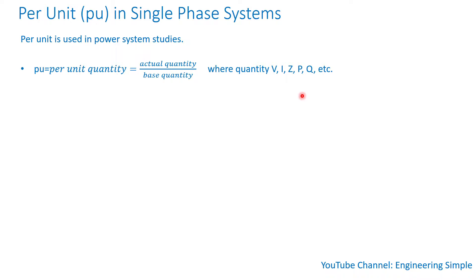It can also be reactive power in megavars or kilovars. The base quantity is picked conveniently for the study. For MVA, industry-wide, 100 MVA is commonly used as the base, and then all quantities are converted on that base. For example, if your generator or transformer is rated 700 MVA, then 700 divided by 100 equals 7 per unit. You do the same for voltage — pick a base voltage and convert all voltages to that base.